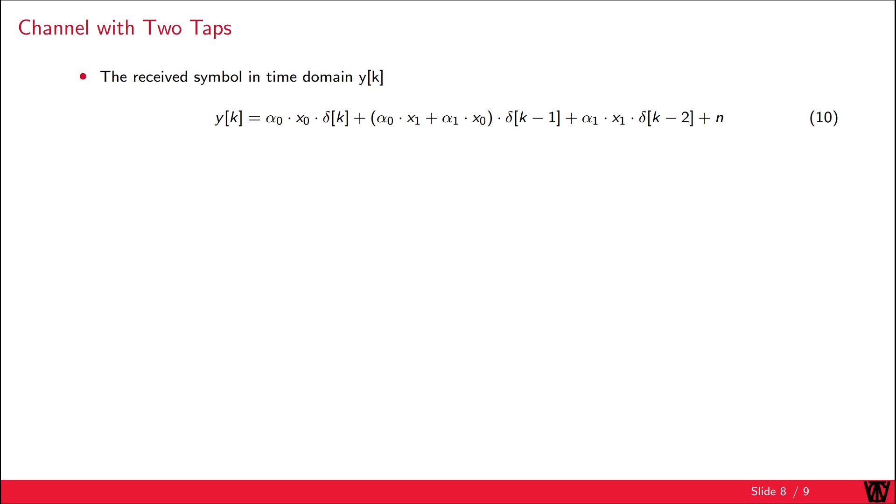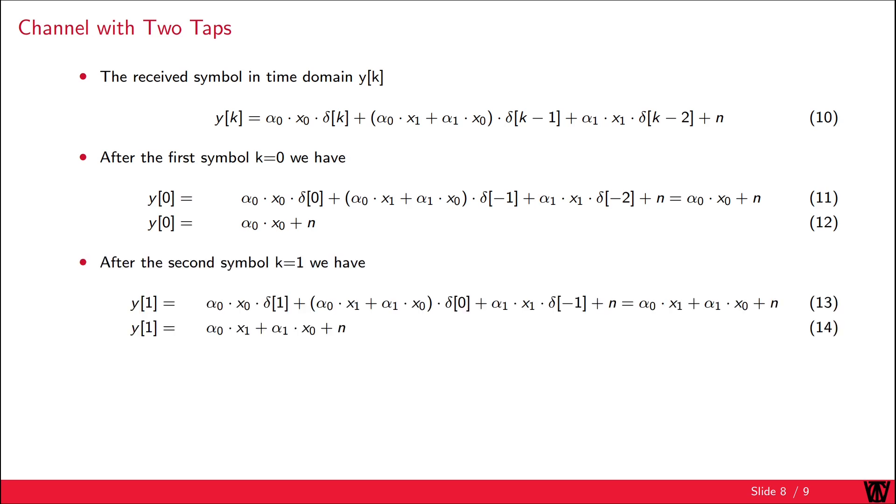Once again, we look at the case after the transmission of the first and second symbol for the two-tap channel. After the first symbol, that is K equals 0, we end up with the same result as before, alpha 0 times X0 plus N. However, after the second symbol, we get a different result. At the receiver for K equals 1, we see alpha 0 times second transmit symbol plus alpha 1 times the first transmit symbol plus the noise. This means our first transmit symbol interferes with our second transmit symbol at Y from 1. This is known as inter-symbol interference.